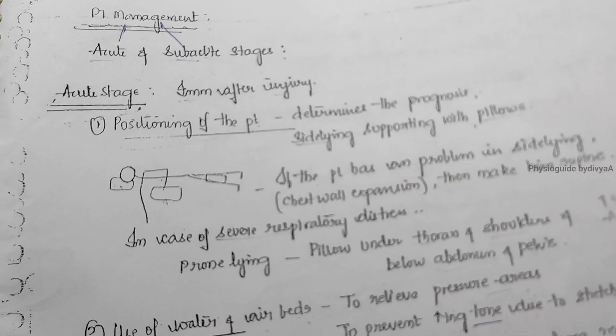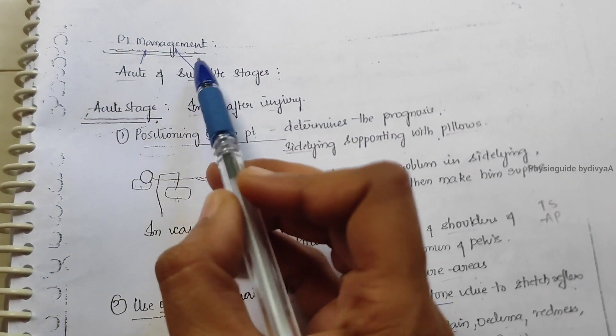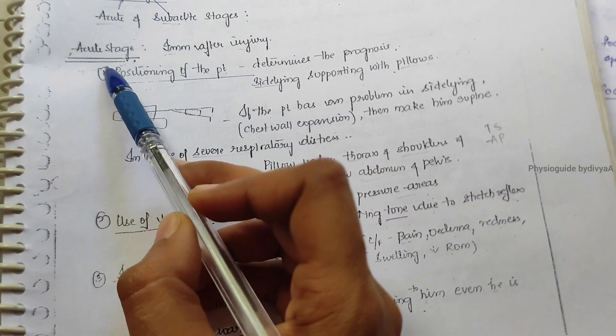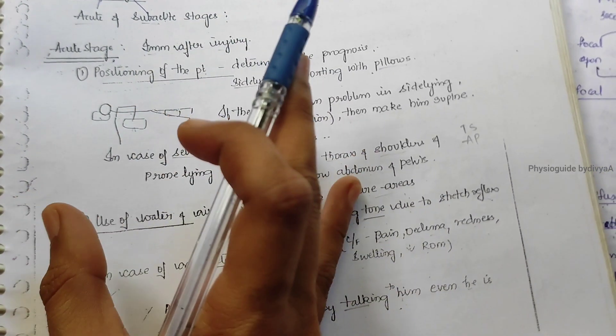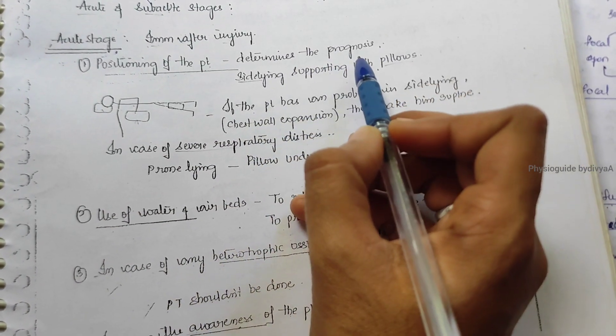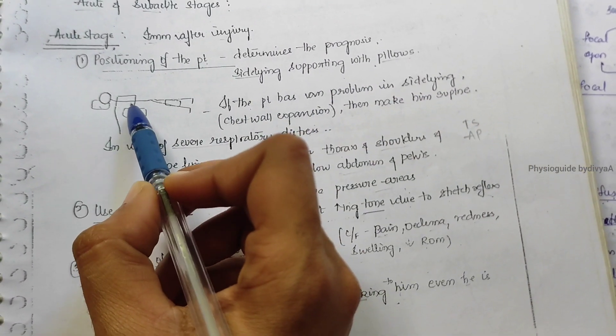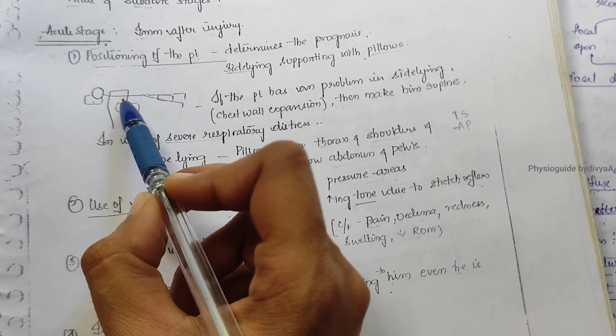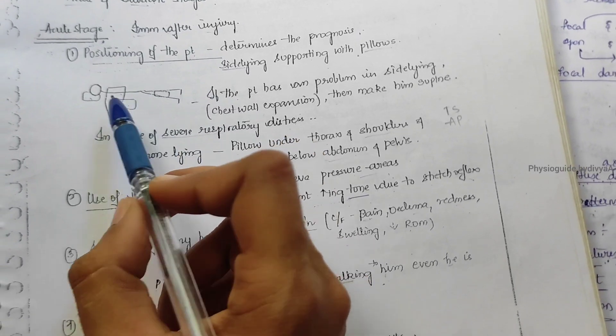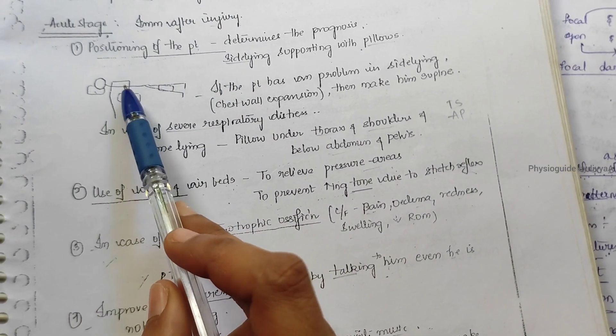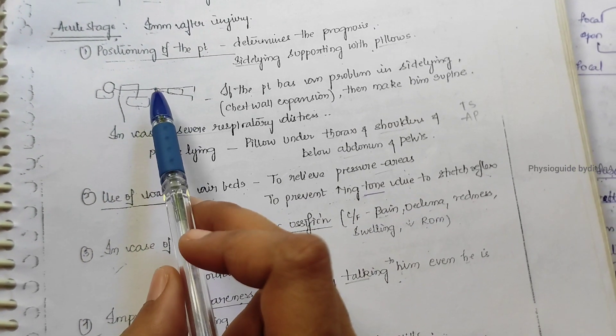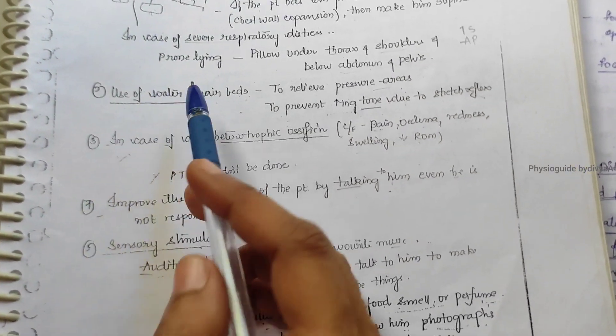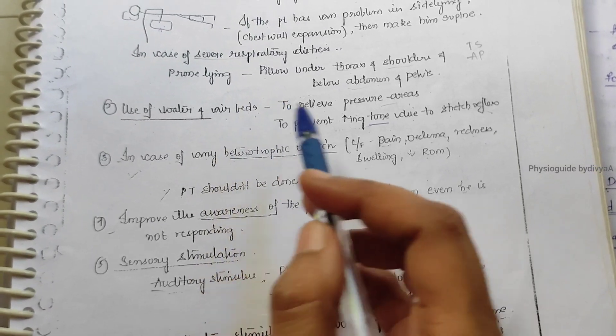Physiotherapy management has acute and sub-acute stages. In acute stage, immediately after injury, patient positioning needs to be maintained to determine prognosis. Support sideways with pillows if needed. If the patient has chest wall expansion problems, make them supine. In severe respiratory distress, prone lying is suitable with support under thoracic, shoulder, abdominal, and pelvis areas.